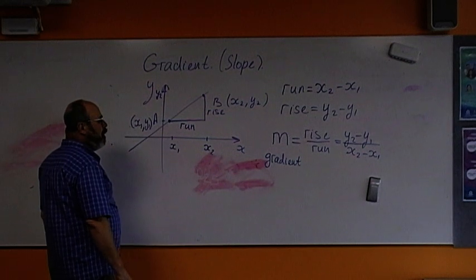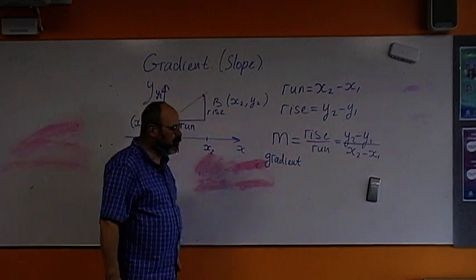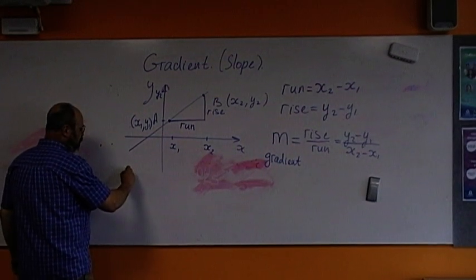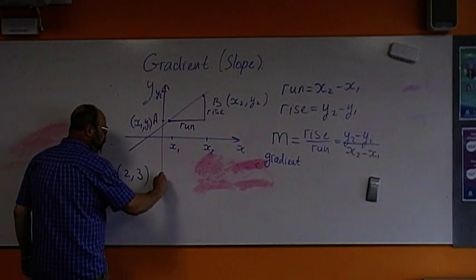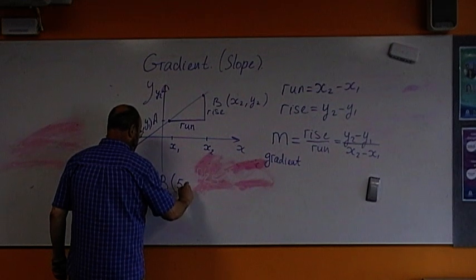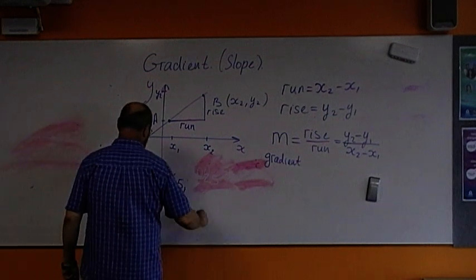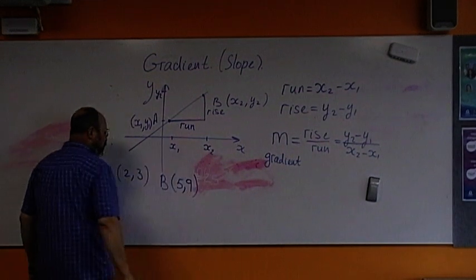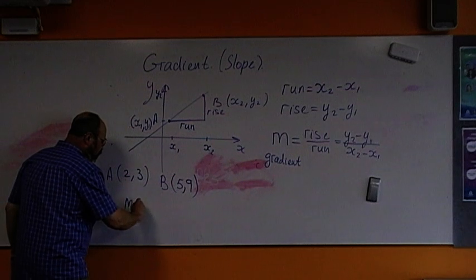Let's consider two points. The point A has coordinates, let's say, 2, 3. And point B has coordinates, let's say, 5 and 9. Let's find the gradient.